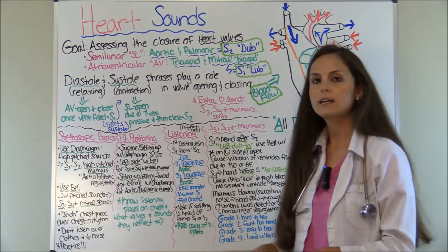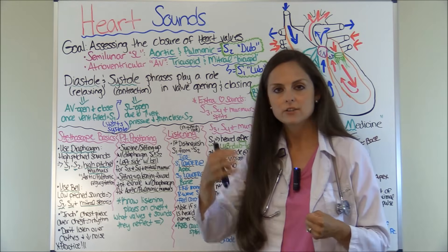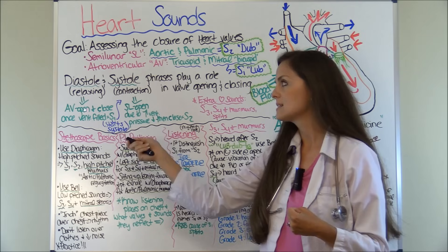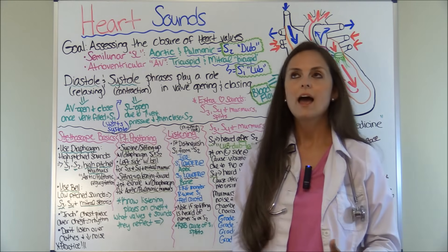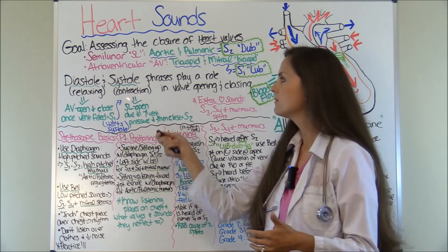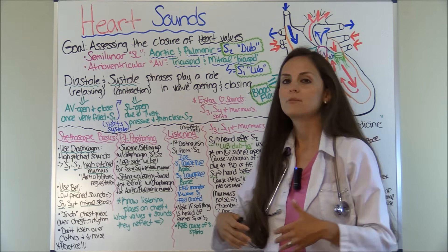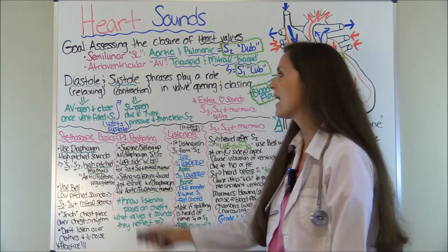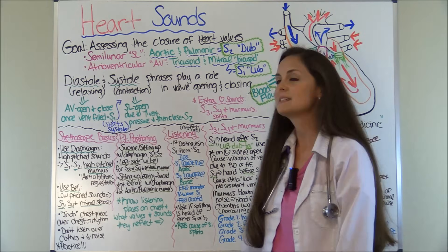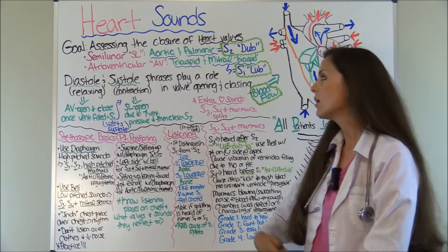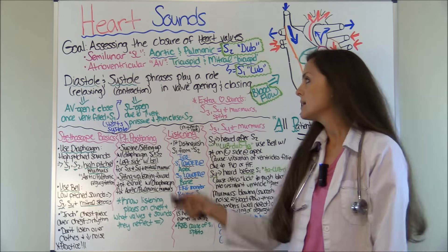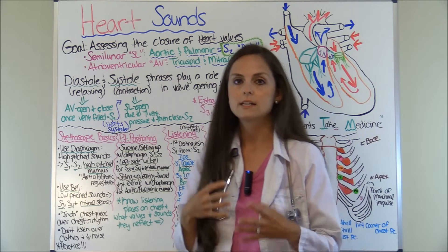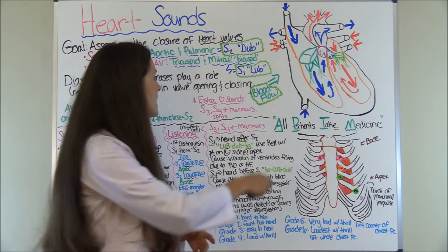Whenever the heart is relaxing and contracting, the relaxing phase is diastole. I remember that because whenever a person dies, they're relaxing. The opposite is systole — contraction. So when the heart is contracting and resting, these valves will be opening and closing during certain times. It's very important you understand how blood flows through the heart.